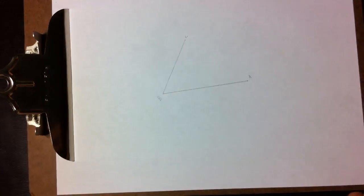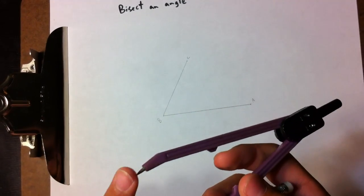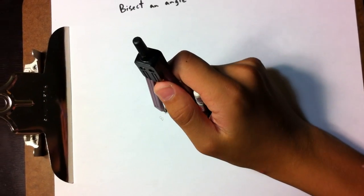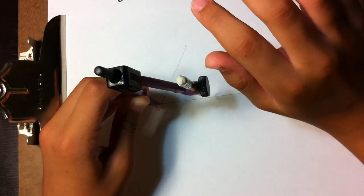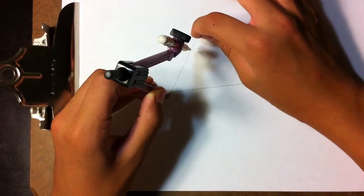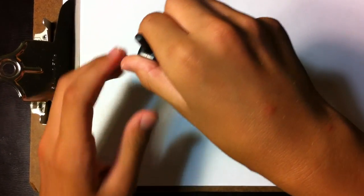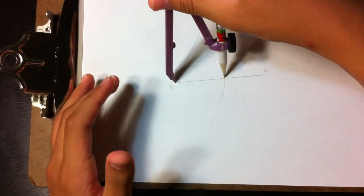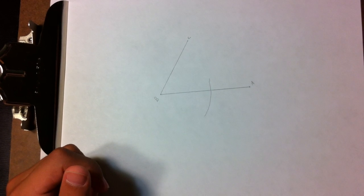Okay, so now you have your angle. You're gonna set your pokey point thing on point B. It doesn't really matter what compass setting you set, as long as it is less than BC and less than BA. So it's a perfect setting right here. Just draw an arc.